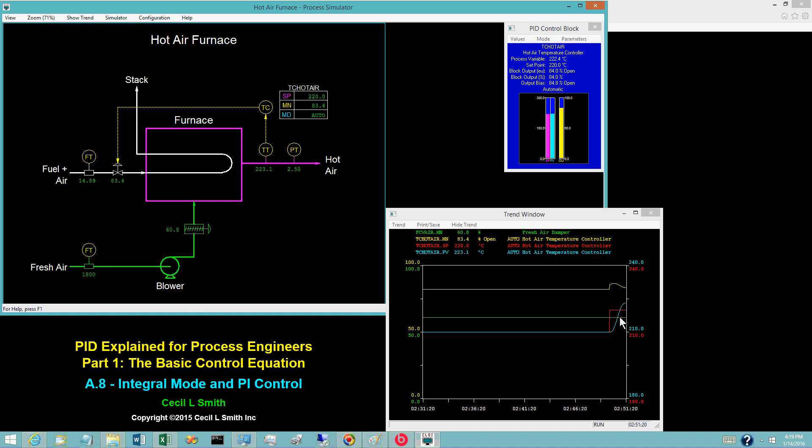The hot air temperature eventually lines out at the new set point. The set point changed by 10 degrees Celsius. The PV does likewise.